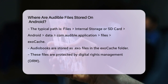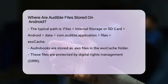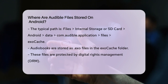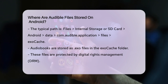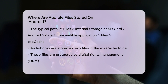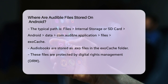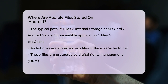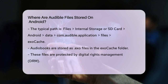Here, you'll see multiple smaller .exo files that make up your downloaded audiobook. It's important to note that these files are protected by Digital Rights Management (DRM), which means you can only play them through the Audible app. If you try to move these files to another device, they won't be playable due to this DRM protection.